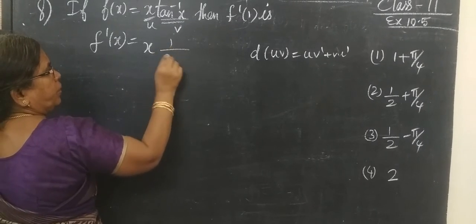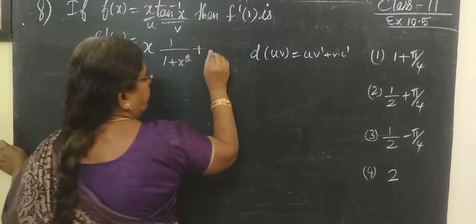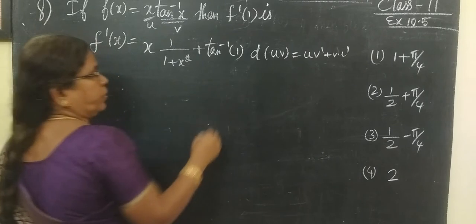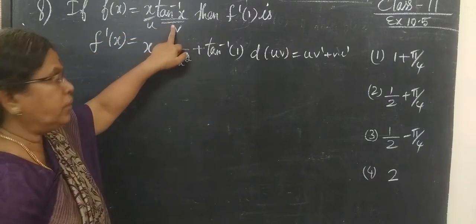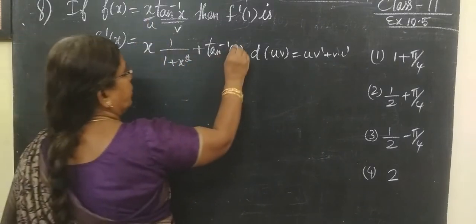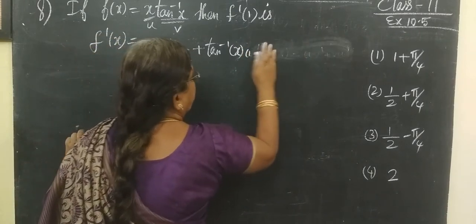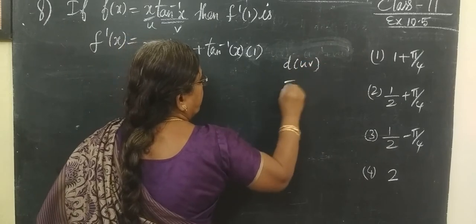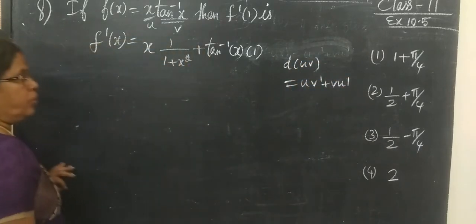Applying the UV formula: d(uv) equals u·v' plus v·u'. The first function times differentiation of the second function — that gives 1 divided by (1 plus x²) — plus keep tan inverse as it is, times differentiation of x which is 1. So the answer is 1.